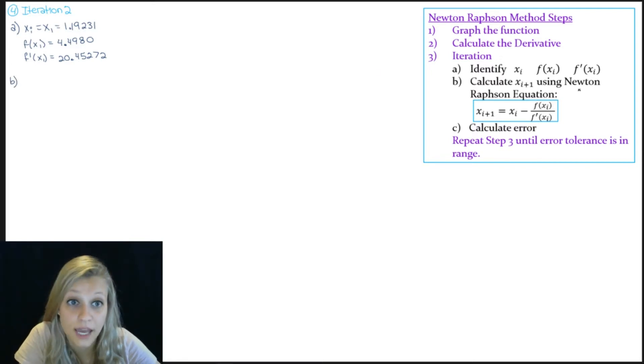Next, we need to calculate our new guess using the Newton-Raphson equation. So our most current guess is 1.19231. And so we're going to subtract that from 4.4980 divided by 20.45272. And that will give us a value of 0.97274. And this I'm going to denote as x of 2.